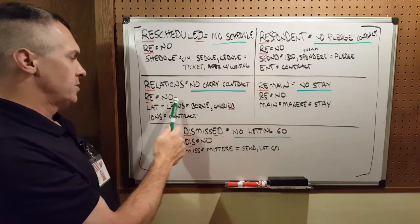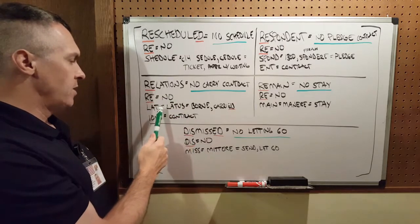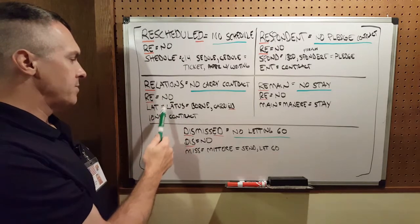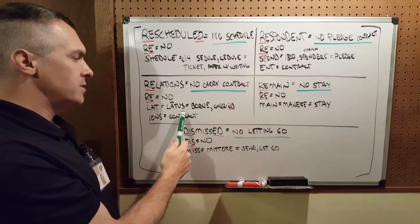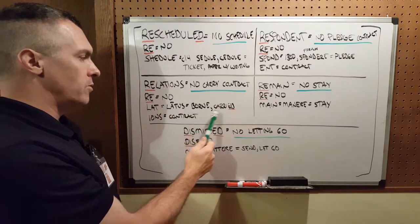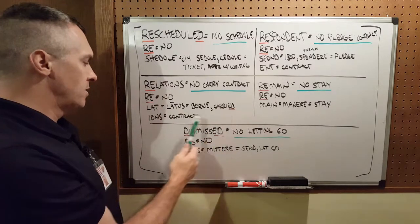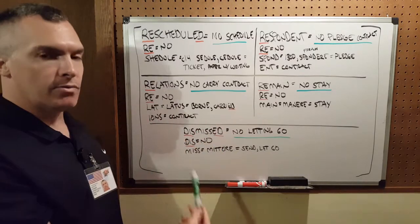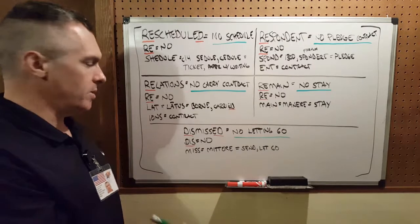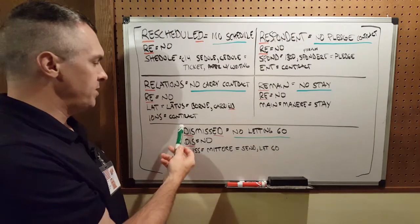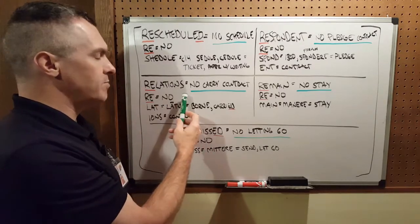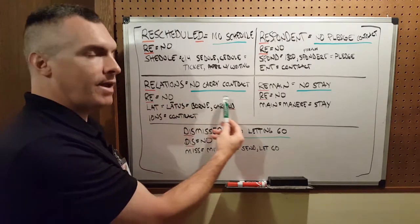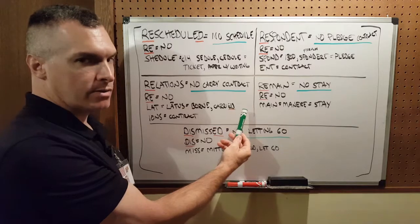'Relations.' RE means no. In Latin, 'late' means latest, born or carried. ION is a word-forming element which means contract. So 'relations' means no carry contract.